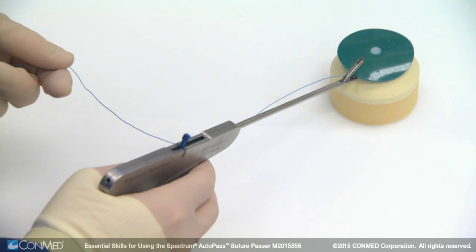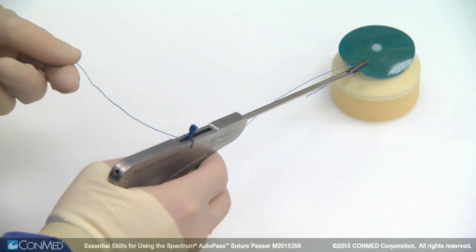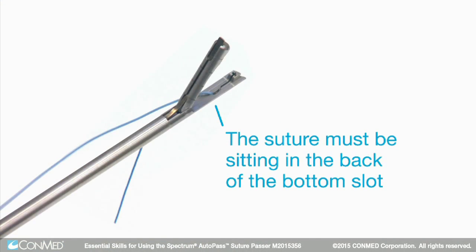Once inside the joint, squeeze the jaw lever to grasp the tissue. The suture must be sitting in the back of the bottom slot. If not, pull slight tension on the suture.